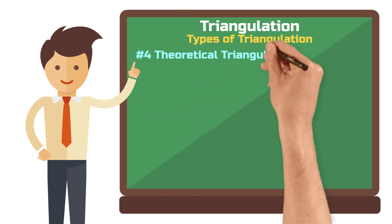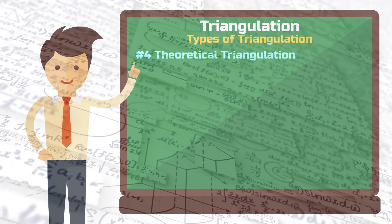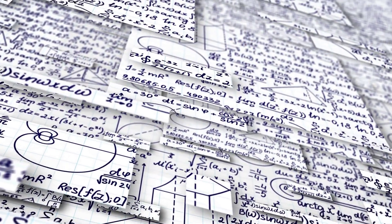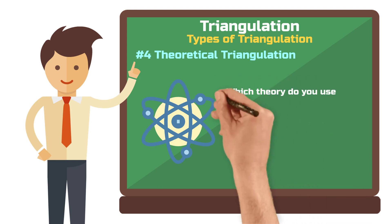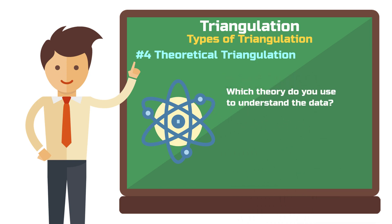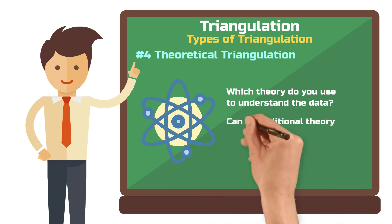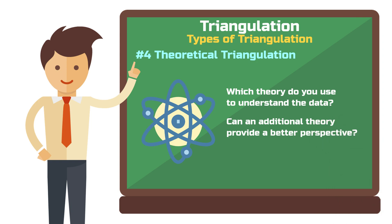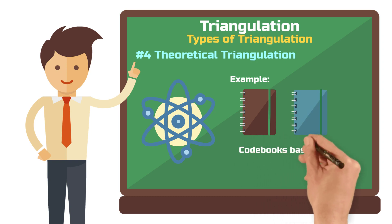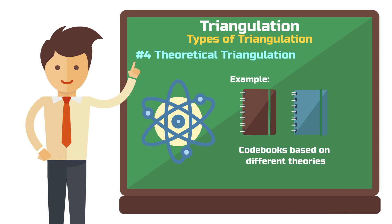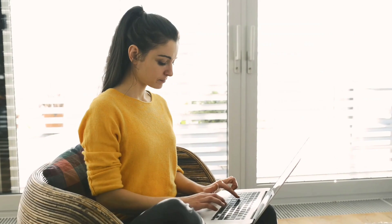The last type of triangulation is quite exciting, but also not easy for beginners to implement. Before analyzing your data, you must be aware of your theoretical background — which theory do you use to understand the data or the phenomenon? Different theories offer different perspectives. In theoretical triangulation, you apply several different theoretical frameworks to the data and view the phenomenon from different angles. For example, you could develop a codebook for analyzing your interview transcripts based on a specific management theory, then analyze your transcripts again with a codebook developed using a specific psychological theory. Your imagination is the limit here, provided you argue well why you chose those specific theories.